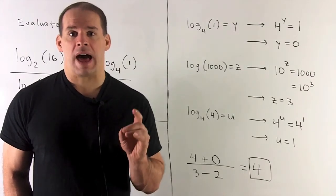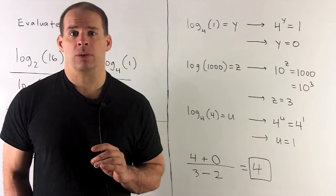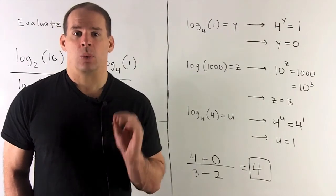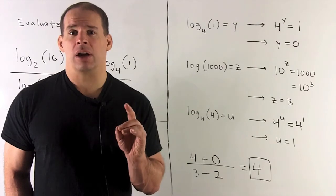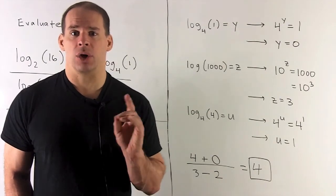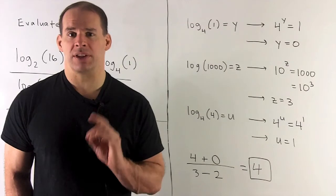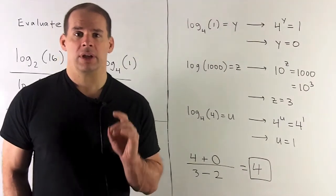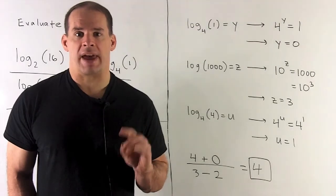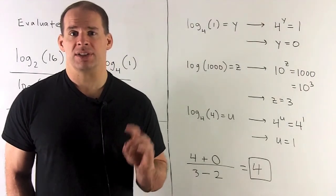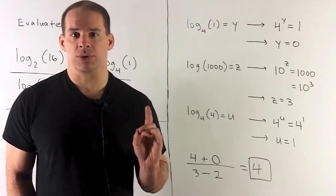Now, log of 1,000. We'll call this z. We're not told what the base is, so that's going to mean that our log here is to the base 10. So if you're not given your base, it's implicit that your base 10. Here, we rewrite. That's going to give me 10 to the z equals 1,000. 1,000 is 10 cubed, so I'll have z equals 3.